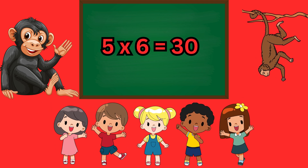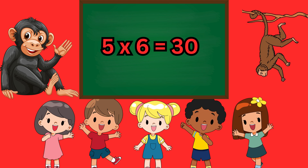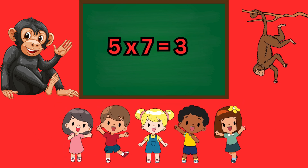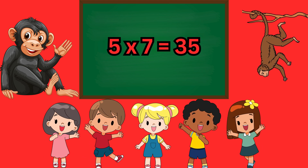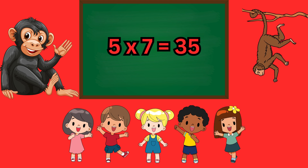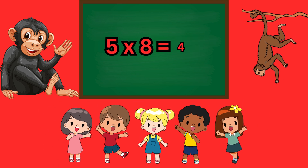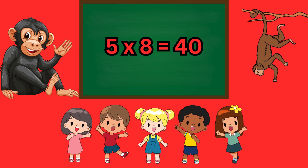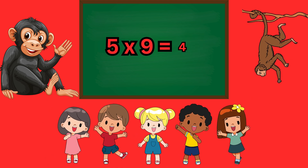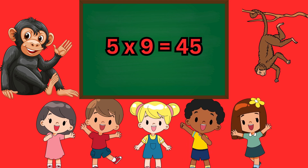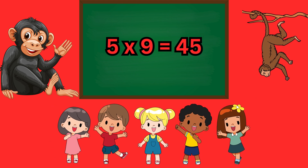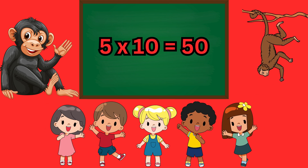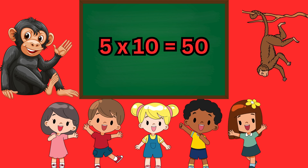5 sixes are 30, 5 sevens are 35, 5 eights are 40, 5 nines are 45, 5 ten's a 50.